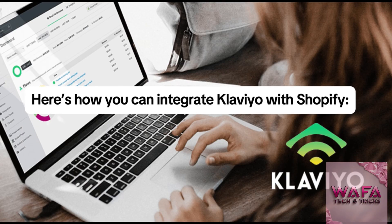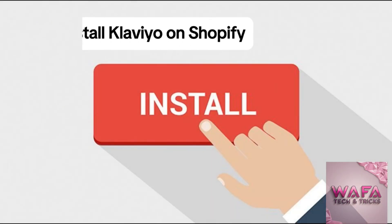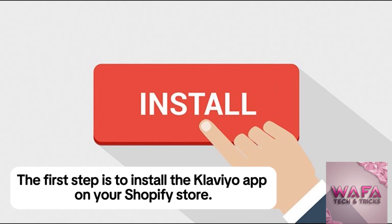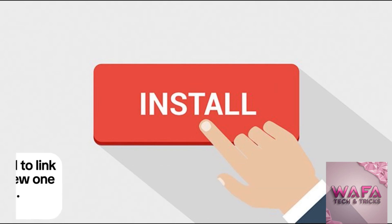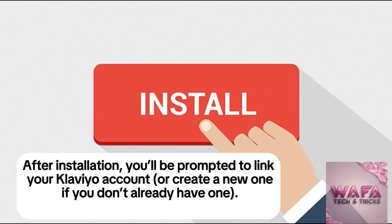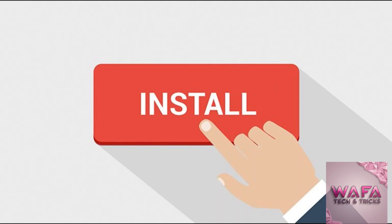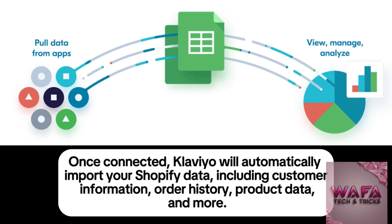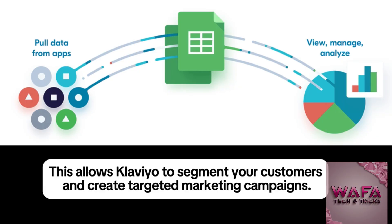Here's how you can integrate Klaviyo with Shopify. Step 1: Install Klaviyo on Shopify. The first step is to install the Klaviyo app on your Shopify store. After installation, you'll be prompted to link your Klaviyo account or create a new one if you don't already have one. Step 2: Sync data. Once connected, Klaviyo will automatically import your Shopify data, including customer information, order history, product data, and more. This allows Klaviyo to segment your customers and create targeted marketing campaigns.